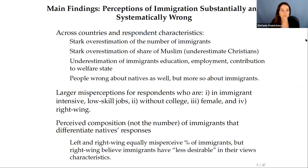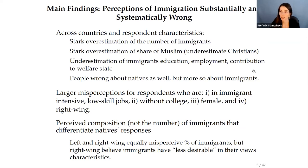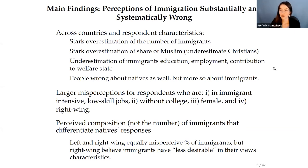To summarize the perceptions part: people overestimate the number of immigrants and have wrong views about immigrant characteristics — thinking they are less educated, more unemployed, and more reliant on transfers. People are also wrong about non-immigrants, but always systematically more so about immigrants. Importantly, while left and right-wing respondents don't differ in their already overinflated perceived share of immigrants, they definitely differ in their perceived composition of immigrants.